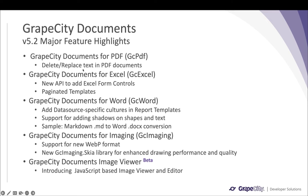In GCPDF we have added a new API that will help you delete or replace text in PDF documents. In GC Excel you will now be able to create Excel forms — we have introduced a new API to add Excel form controls to spreadsheets. In GC Excel templates you will now be able to perform automatic worksheet pagination using a new property.